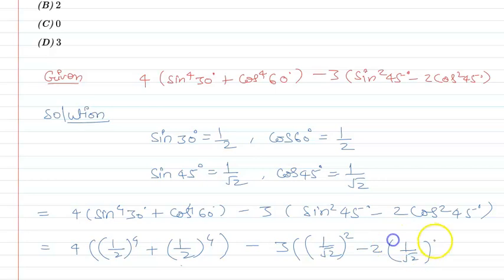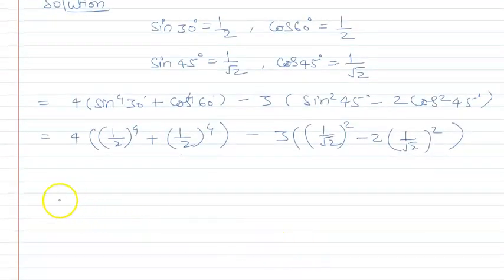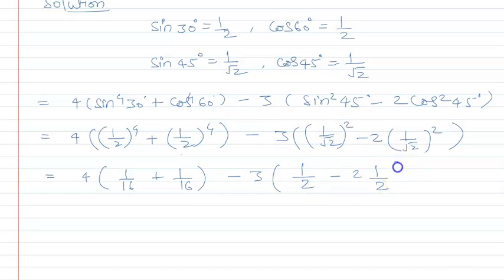Further simplifying, we get 4 times 1/16 plus 1/16, minus 3 times 1/2, minus 2 times 1/2. The 2s cancel out. Taking LCM, here the LCM is 16, giving us 1 plus 1 minus 3.